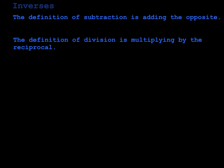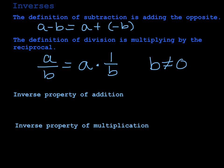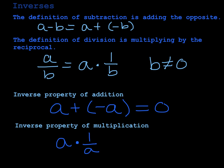The next properties are the inverse properties. The definition of subtraction is adding the opposite: a minus b is the same as a plus the opposite of b. The definition of division is multiplying by the reciprocal: a divided by b is the same as a times the reciprocal of b, as long as b is not 0. The inverse property of addition says that a plus negative a equals 0. The inverse property of multiplication says that a times its multiplicative inverse equals 1.